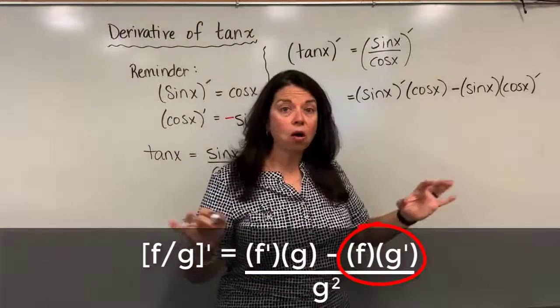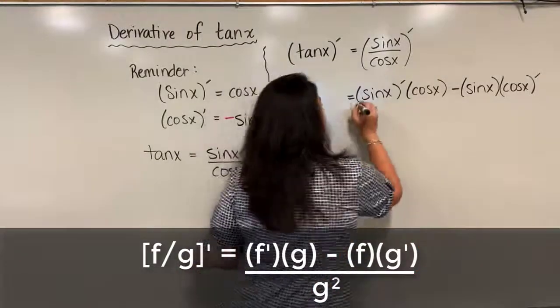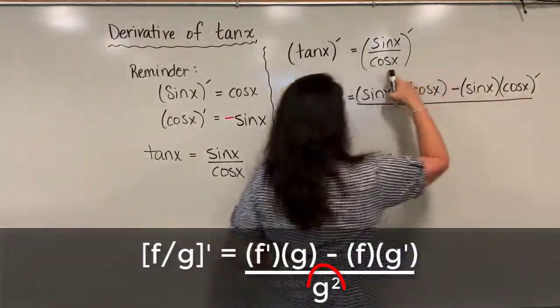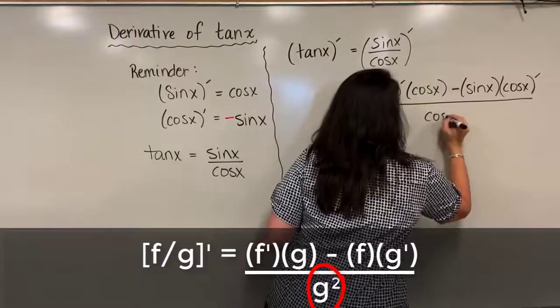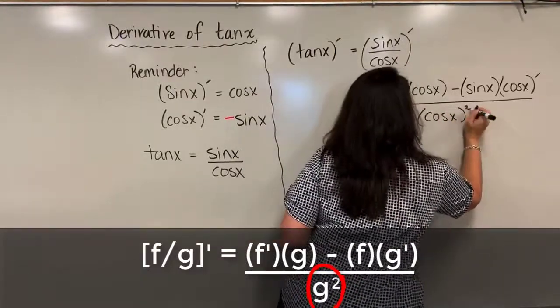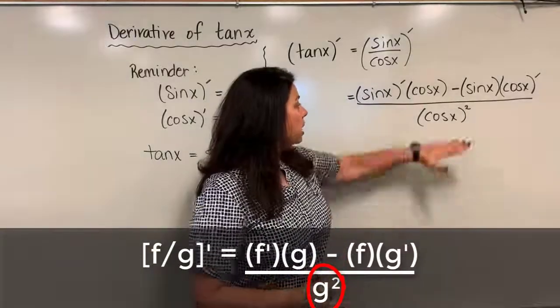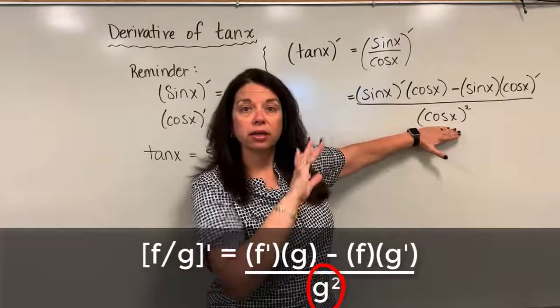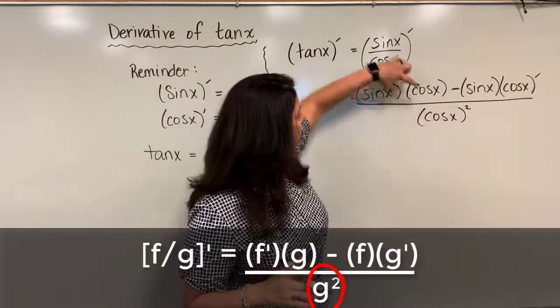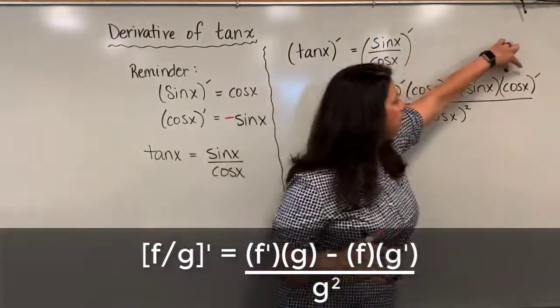Now of course we can't forget all of that is being divided by the denominator cosine x but squared. So whatever you have in that denominator put it on bottom and square it. You're not taking the derivative of that denominator here. The derivatives only come up in this top section.